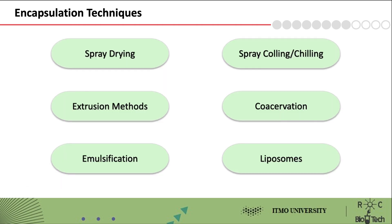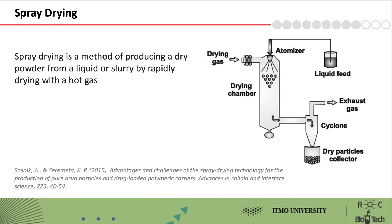Let's now turn to the popular encapsulation techniques. On this slide, you can see a few of them. Today, I'd like to discuss only three. First, spray drying is one of the oldest and most widely used encapsulation techniques in the food industrial sector. It is flexible, continuous, and most importantly, an economical operation. It produces particles of good quality with sizes less than 40 micrometers.